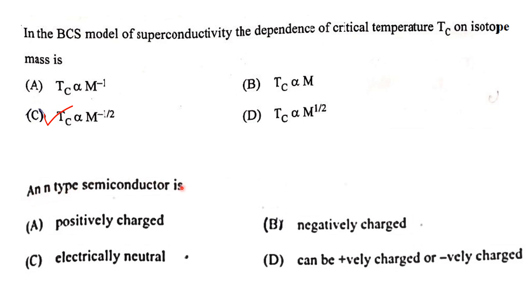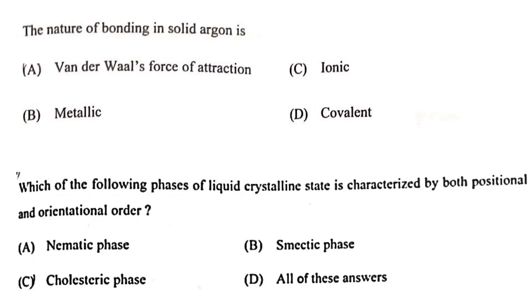An n-type semiconductor is always electrically neutral — in fact, any p-type or n-type semiconductor is always electrically neutral. Regarding the nature of bonding in solid argon: solid argon has van der Waals (dispersion) forces of attraction.